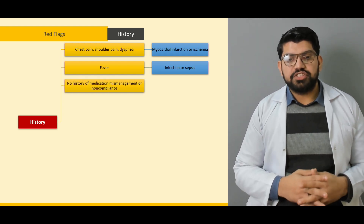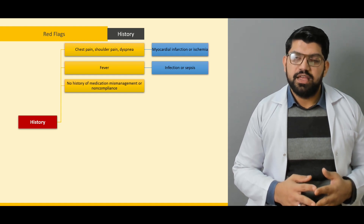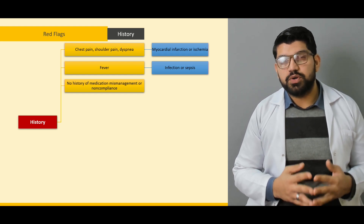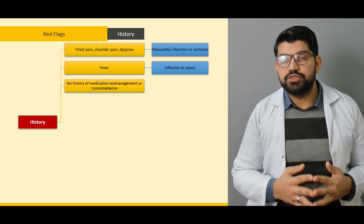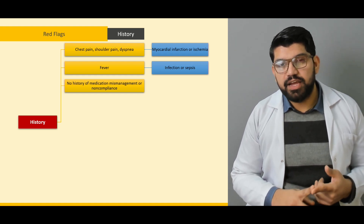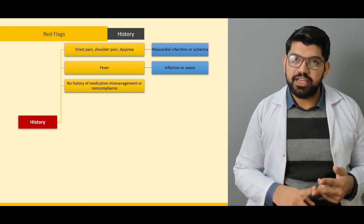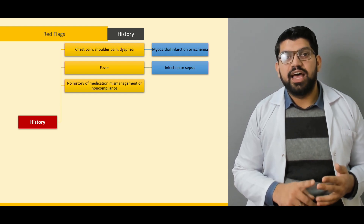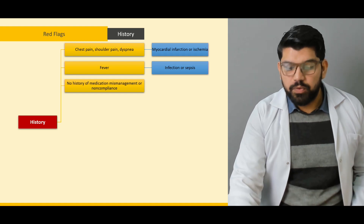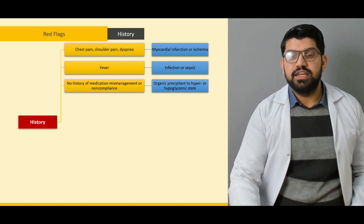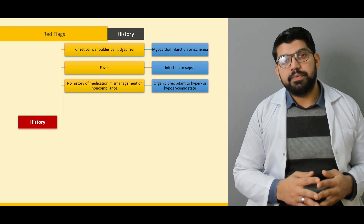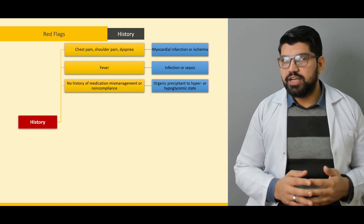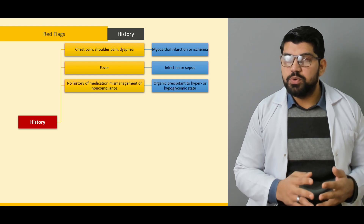Regarding history of medication mismanagement or non-compliance: many patients in developing countries have not developed adequate medical facilities or are not well educated about diabetes control. They are not dietary compliant, not taking medications adequately, not monitoring their blood pressures, and not following up with an endocrinologist as needed. With no history of medication compliance, organic precipitants — hyperglycemic and hypoglycemic states — are most importantly due to non-compliance.